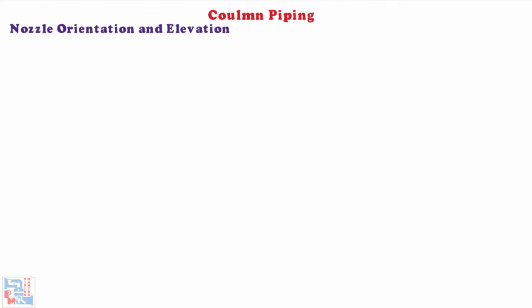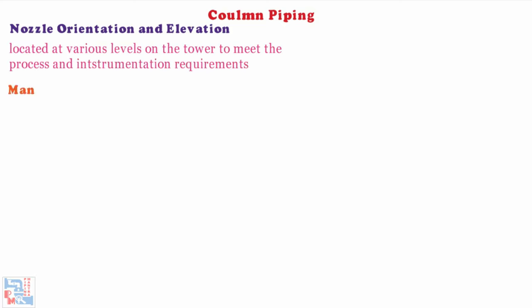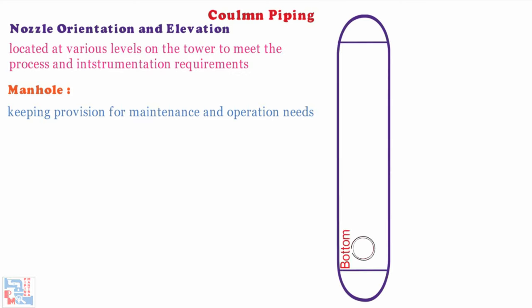Now let's discuss nozzle orientation and elevation. Nozzles are located at various levels on the tower to meet the process and instrumentation requirements. Now comes manholes. Manholes are to be oriented keeping provision for maintenance and operation needs. Manholes are usually located at bottom, top and intermediate sections of tower.